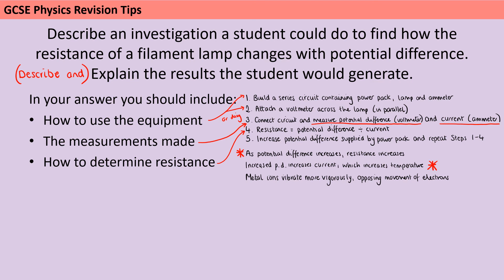You also need to make the link between potential difference and current, and between current and temperature. If you did manage to get six marks, well done — this was a tough question.